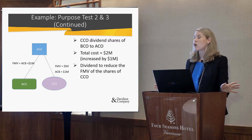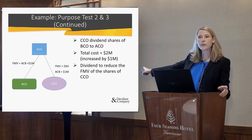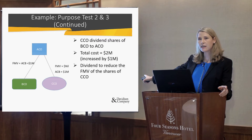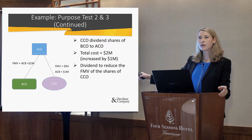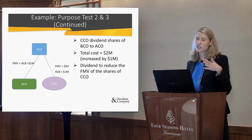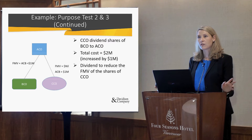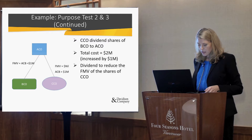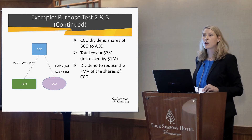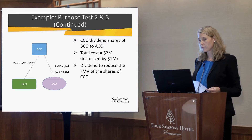Now suddenly you've got $2 million of total cost base — $1 million of cost base in Company C and $1 million of cost base in Company B. You've created another $1 million of cost base, which you could potentially use to move assets around without paying any tax. You can see that the CRA obviously didn't like that either, and that's the kind of situation that would fall into these new purpose tests.